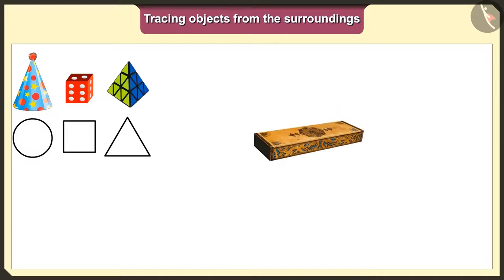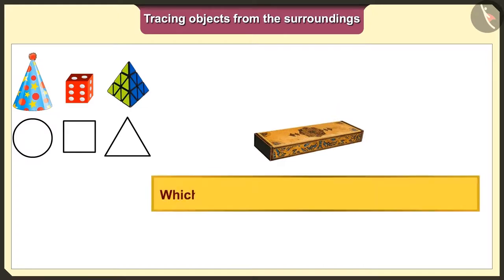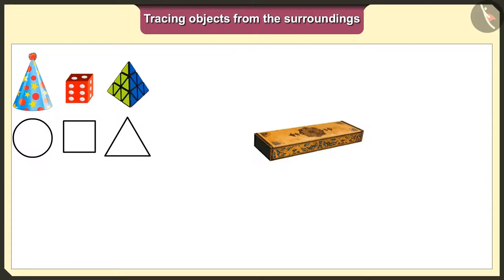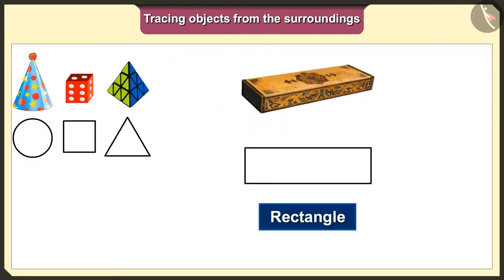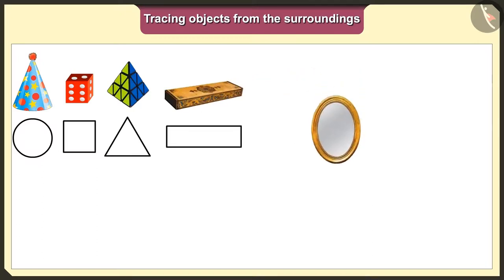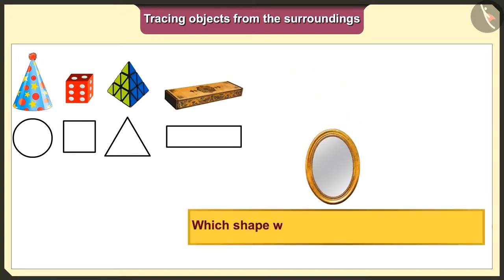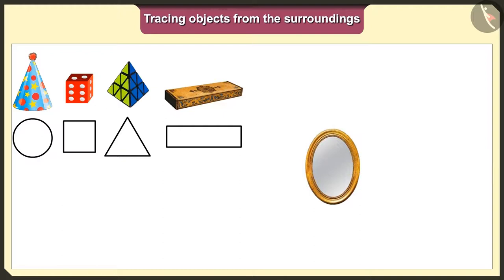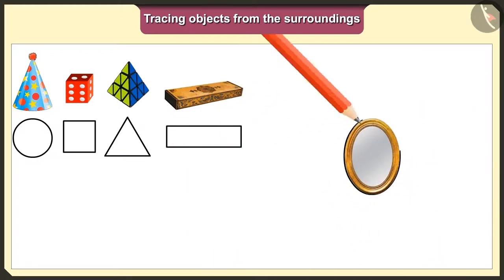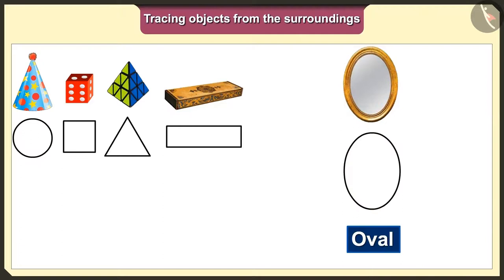Friends, can you all guess which shape we would get when we trace this pencil box? Let us trace this pencil box too. The base of the pencil box is a rectangle. So, we will get a rectangle shape when we put it on paper and trace it. Now, tell me which shape we would get when we trace this mirror? The base of this mirror is oval. So, we will get an oval shape when we put it on paper and trace it.